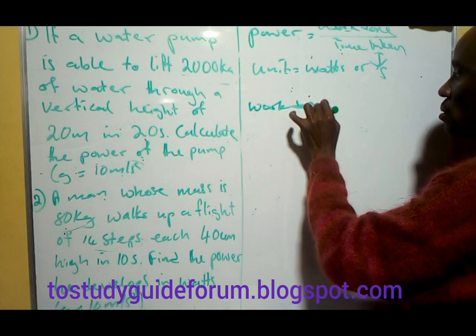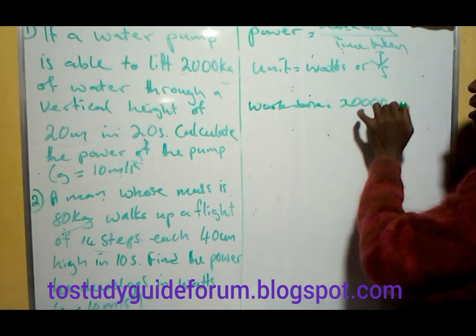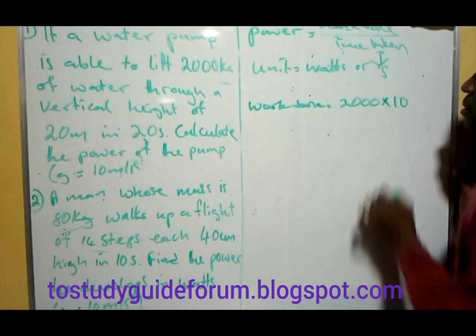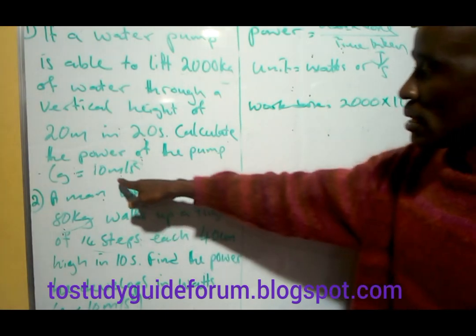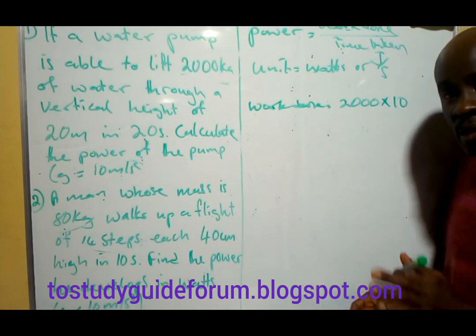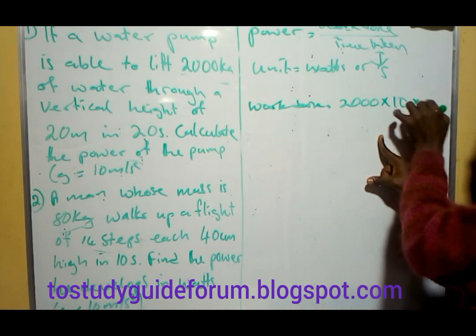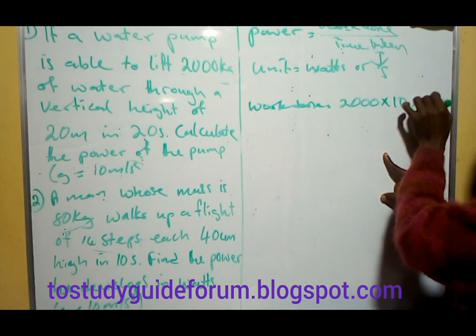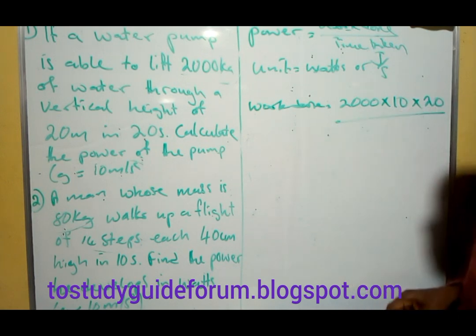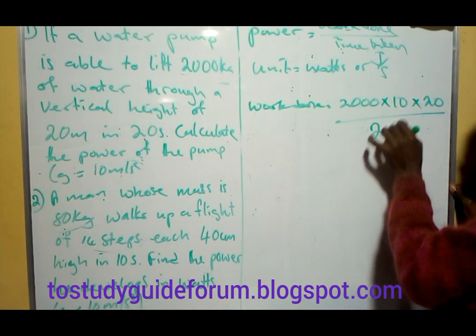Work done equals 22,000 times 10 — which is acceleration due to gravity — because work done is force times distance. The distance given is 20 meters, all over 20 seconds.